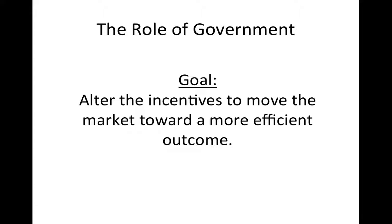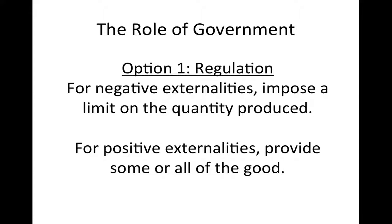Because markets with externalities generate inefficient outcomes, there is a potential role for government. Government's goal in intervening in a market with externalities is to generate a more efficient outcome. There are a few ways that the government can do this. The first option is regulation. In the case of goods that generate negative externalities, the government can simply impose limits on the amount of the good that can legally be produced. In the case of positive externalities, the government can provide a portion of the good itself to help the market reach the optimal quantity.